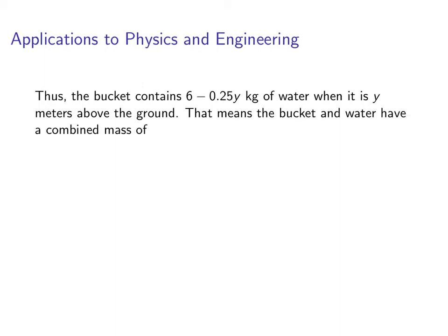That means the bucket and the water have a combined mass. The 2 was the bucket and then the 6 minus 0.25y is the mass of the water. So total bucket plus water, 8 minus 0.25y kilograms when it is y meters above the ground.